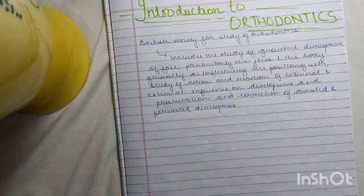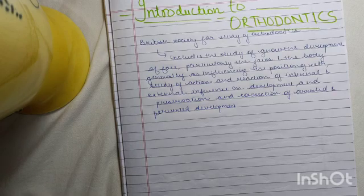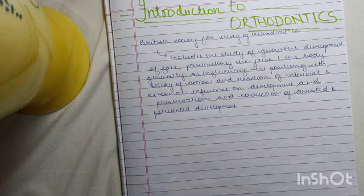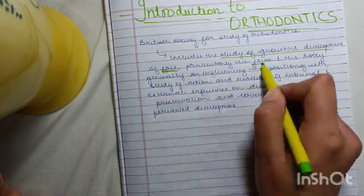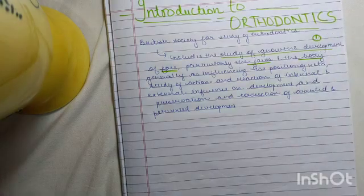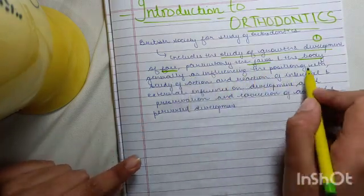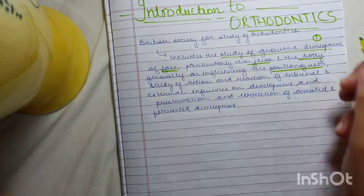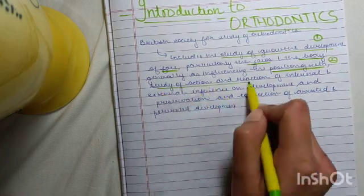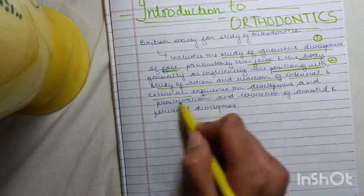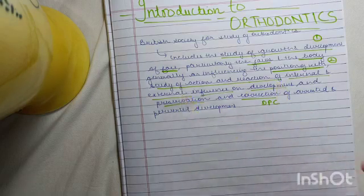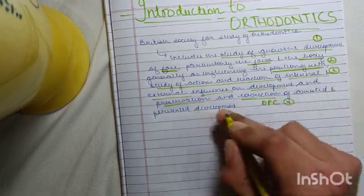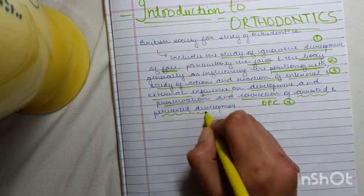Now this is a very long definition and it took me around five minutes to learn it, but I will make it easier for you. First of all, as we progress in this series, you will see that the first act we discuss is growth and development. So it's basically the study of growth and development of the face, particularly the jaws and the body. These are the first keywords you must remember. Second, study of action and reaction of internal and external influences on development, preservation, and correction - DPC. This is third: development, preservation, and correction of arrested and perverted development.